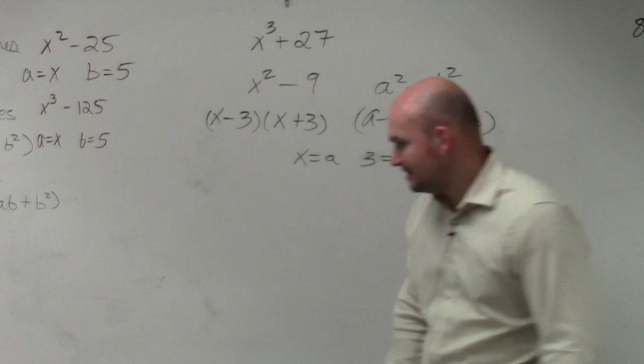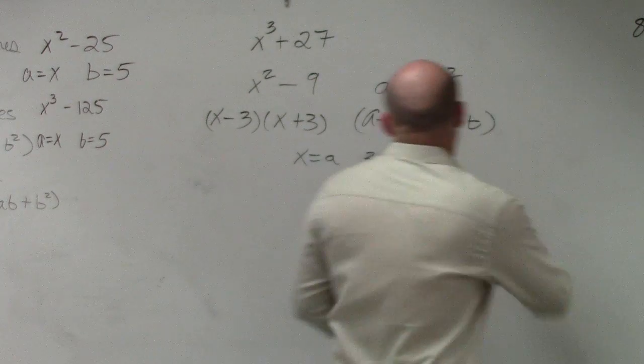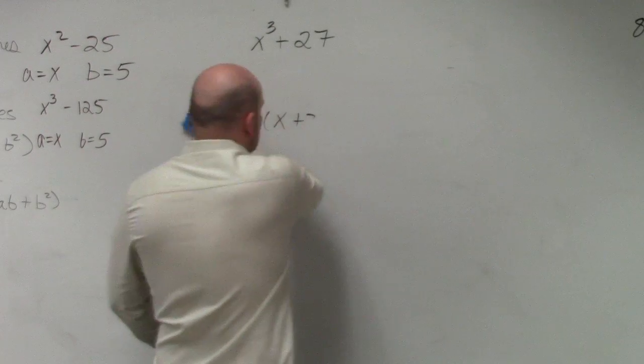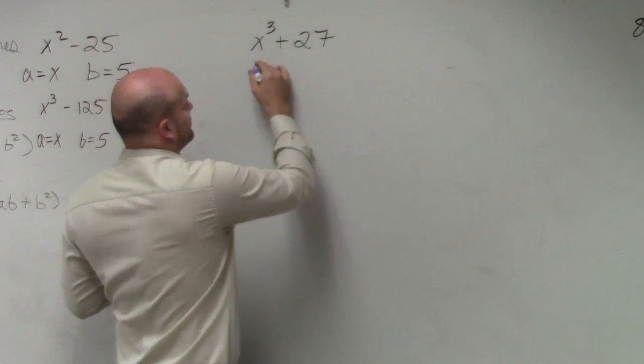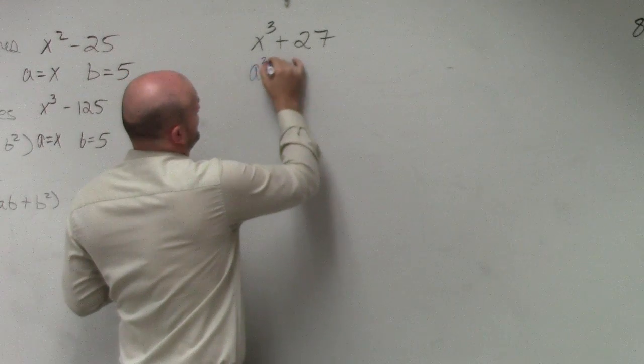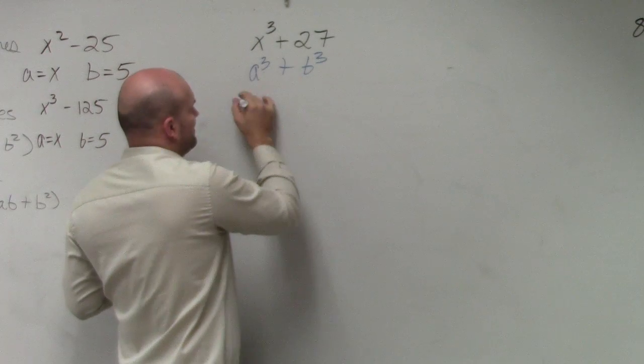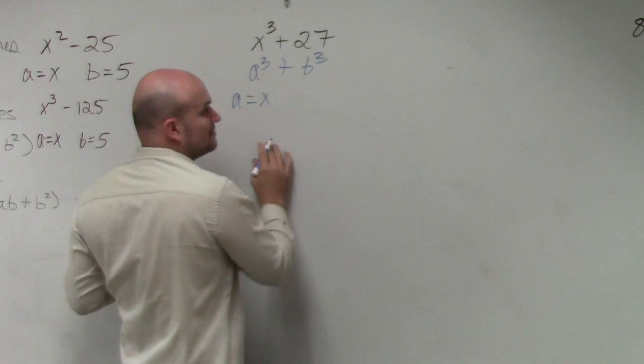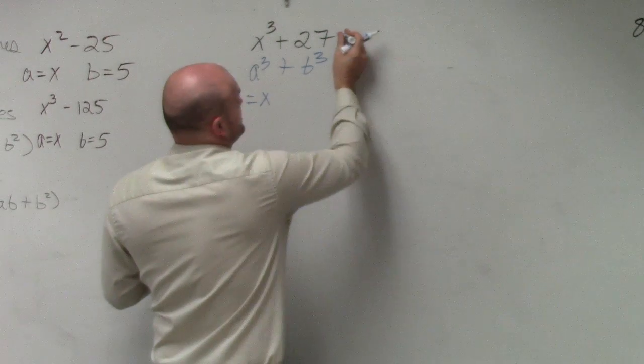So when we look at this problem up here, the first thing that I want to do is identify my a and my b. Again, if we're looking at this as a cubed plus b cubed, what number raised to the third power gives me x cubed? Well, that's kind of easy. a equals x, right? I'm sorry, we're solving these equal to 0.